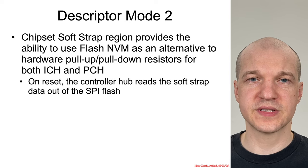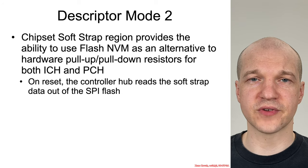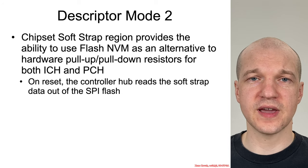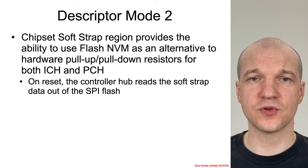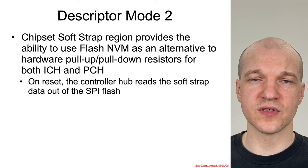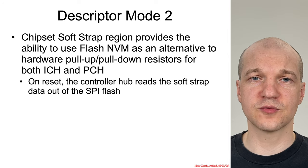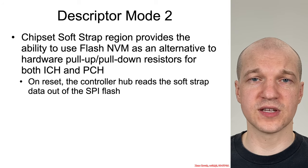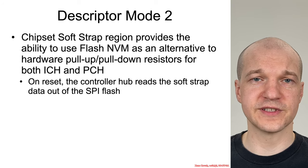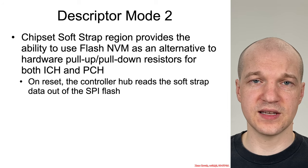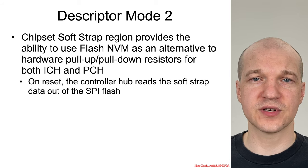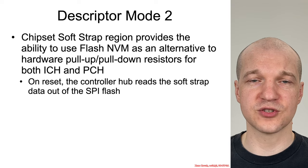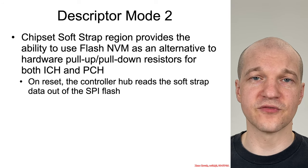Descriptor mode also introduces an interesting capability called soft straps. A hard strap is a place in hardware where a particular pin is pulled up to high voltage or down to low voltage, changing the behavior of the hardware. Soft straps are configurable things that similarly change hardware behavior, but instead of the hardware manufacturer hard-coding those pins to high or low voltage, they can place data into the SPI Flash chip in the soft strap region to change hardware behavior. This allows for easier prototyping, configuration, and experimentation when first developing the system.